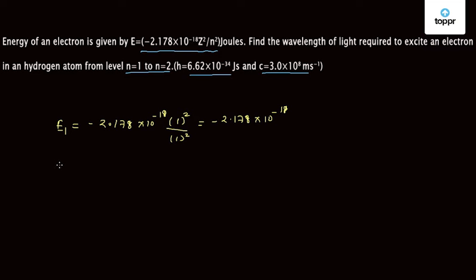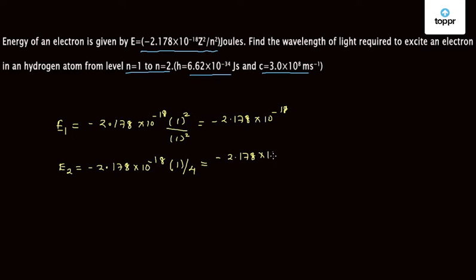Now the energy corresponding to state 2, where n = 2, is E₂ = −2.178 × 10⁻¹⁸ × Z²/n². For hydrogen Z = 1, so Z² = 1, and n² = 4. This gives E₂ = −2.178 × 10⁻¹⁸ / 4 joules.